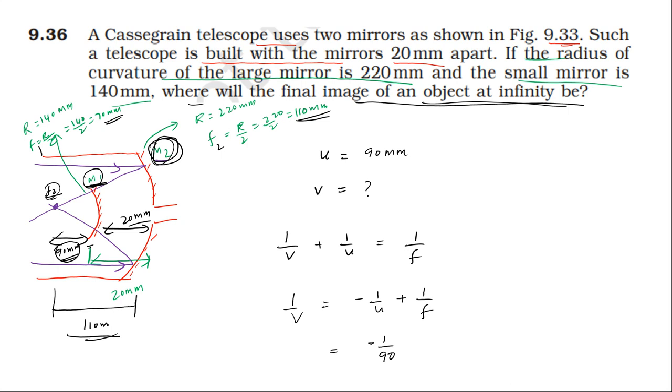For the concave mirror, the focal length is negative. So 1 over v equals minus 1 over 110 minus minus 1 over 90, which gives us minus 20 divided by 9900, or 9900 divided by minus 20. Simplifying, v equals 315 millimeters. The image distance is 315 millimeters from the smaller mirror.